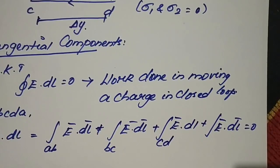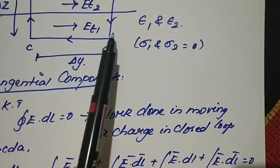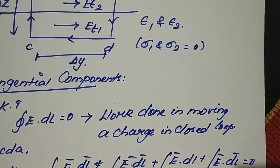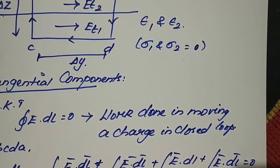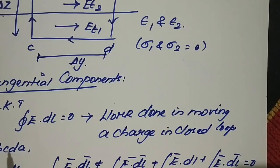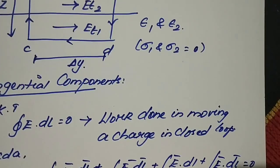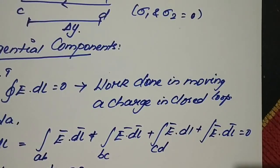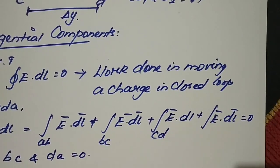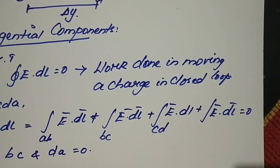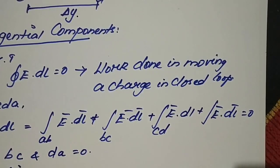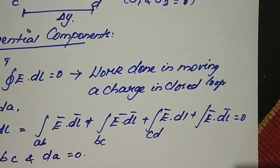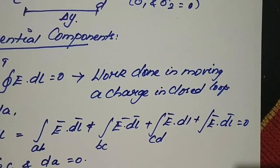If the line integrals over segments bc and da are neglected and set to 0, we are considering only the tangential path. This gives us the basic expression where only segments ab and cd contribute.